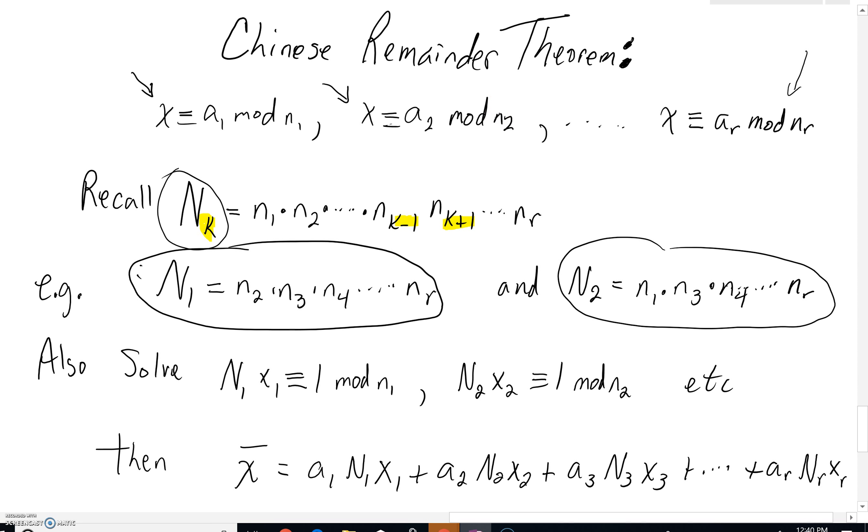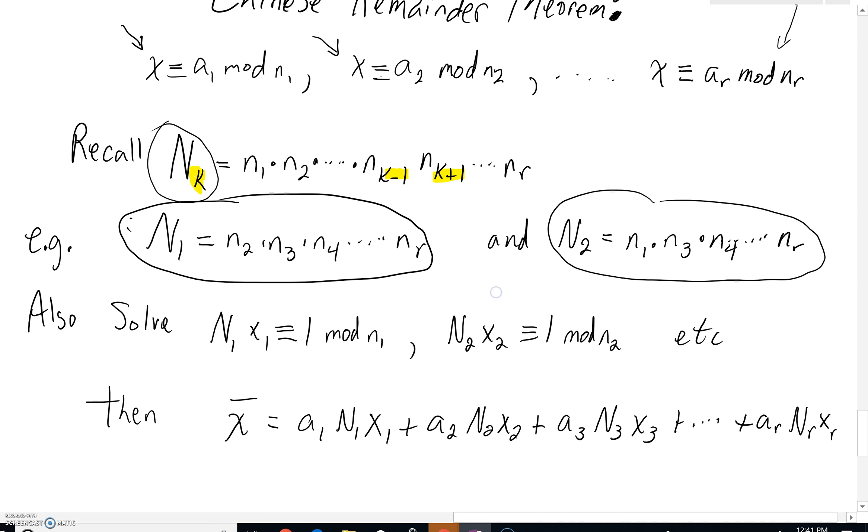Once we have all those capital N's that we're looking at, we can then set up new congruences to solve. We could say n sub 1 times some x value, x sub 1, is congruent to 1 mod n sub 1.